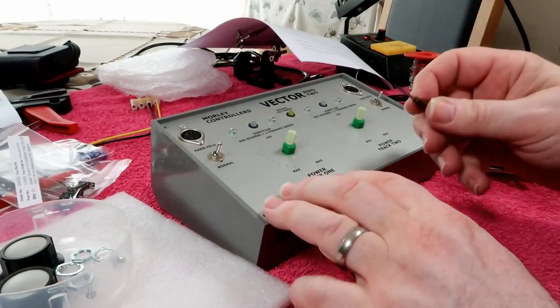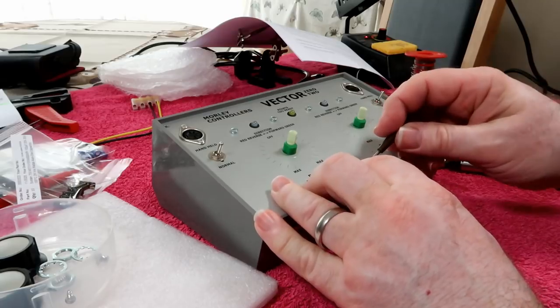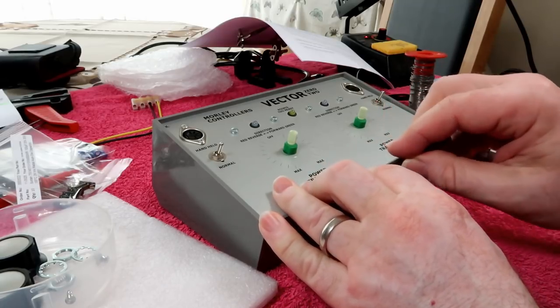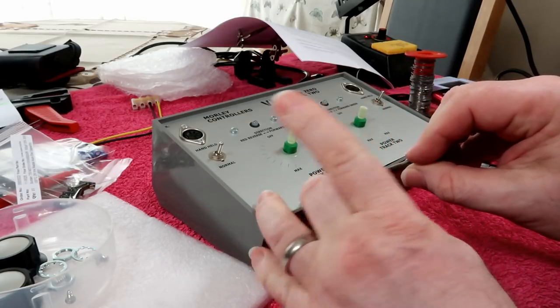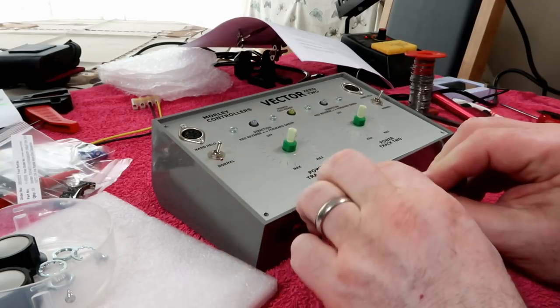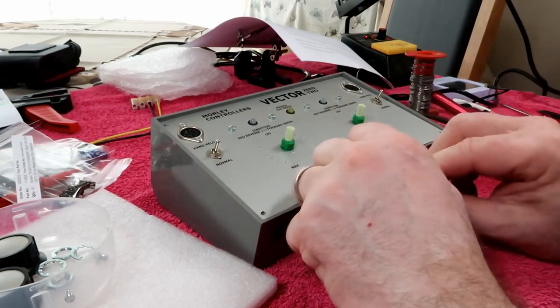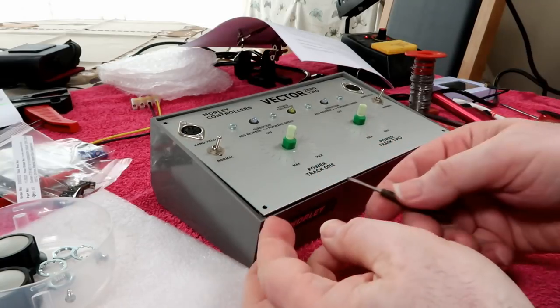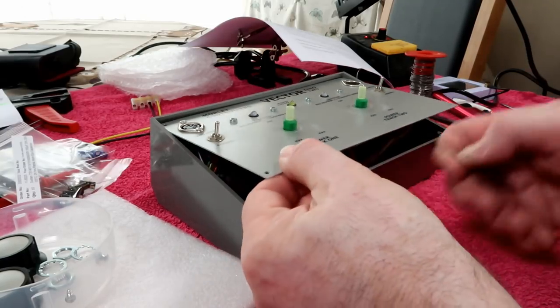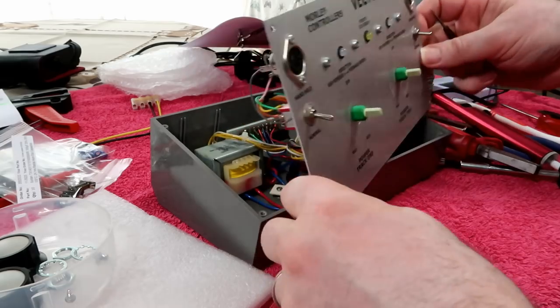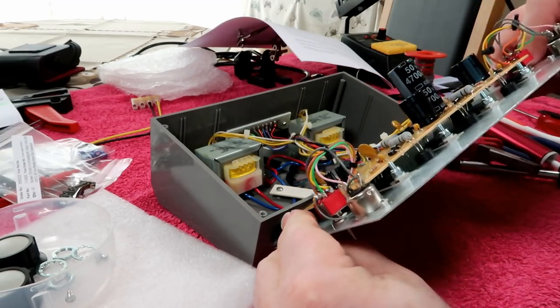Using a small flat bladed screwdriver, gently pull down towards the center of the plastic case and slip the screwdriver underneath. You can then lever up, and then the panel will drop forward. We can now slide it open and gain access to all the components that we need.